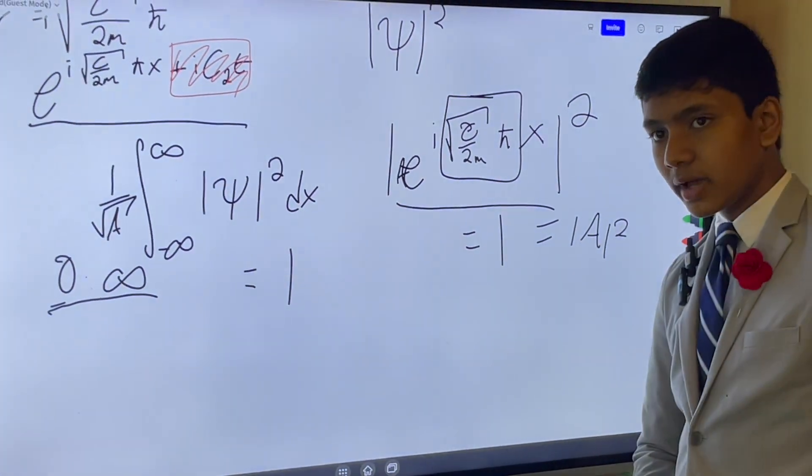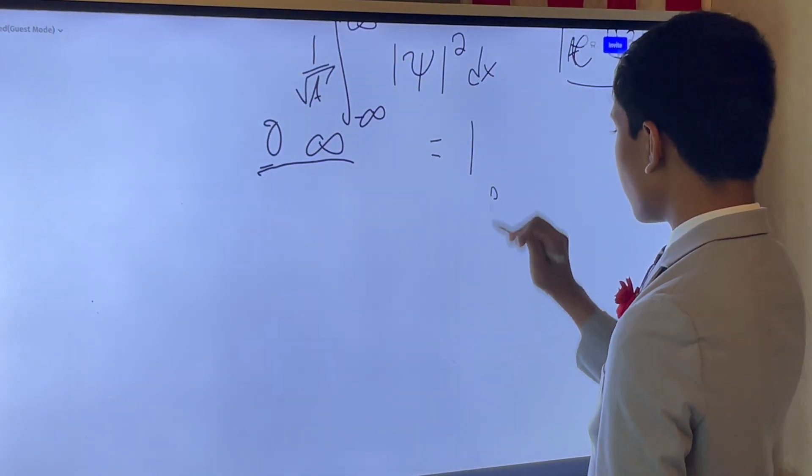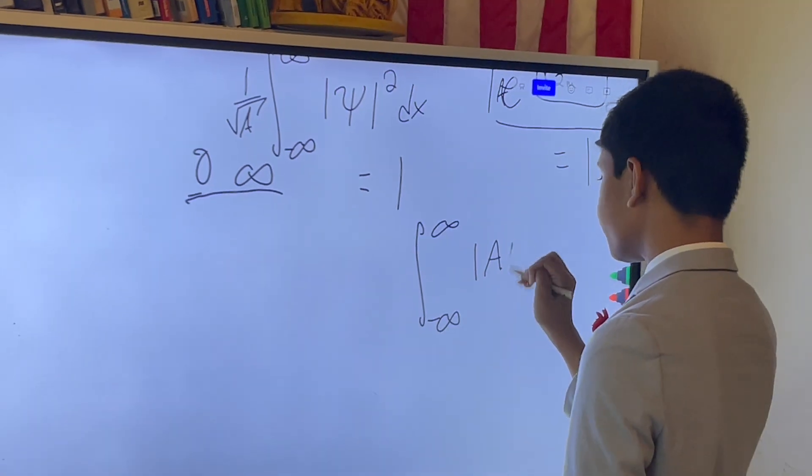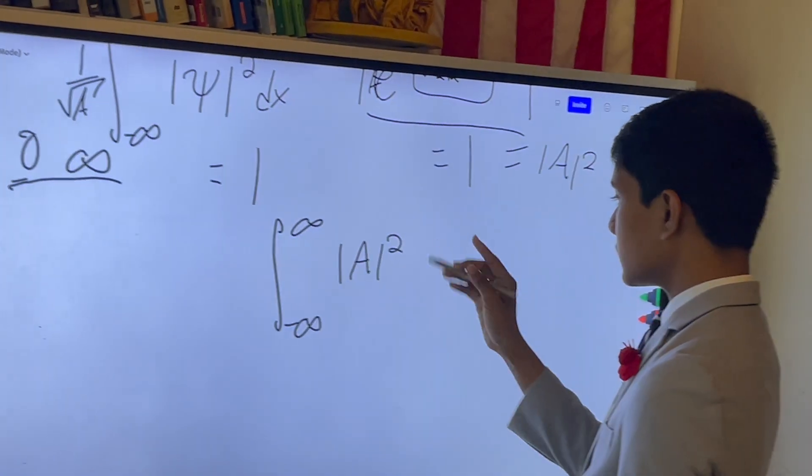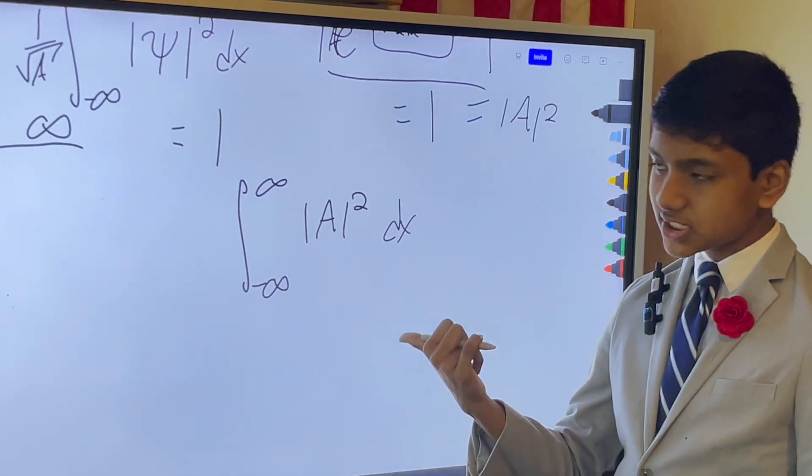But, no matter what, this is going to be a constant. So, you're integrating from minus infinity to infinity of, well, this modulus is a constant. And, hold up a second, what happens when we integrate a constant like this?